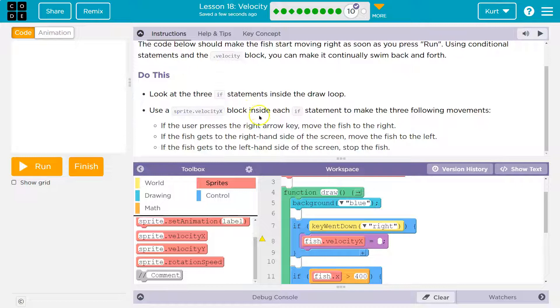And then if the user presses the right arrow key, move the fish to the right. Well, what direction would the right be? It's this way, right? But if you look at the x value on the screen or down here, you can see that that would be x increasing. So to increase velocity, it doesn't give us a speed, but I'll just start with two maybe.